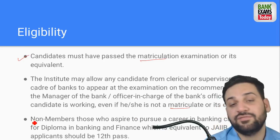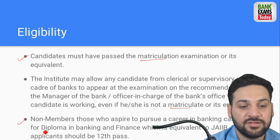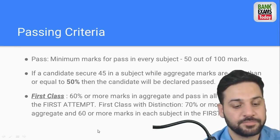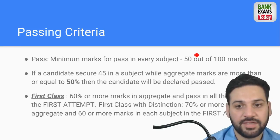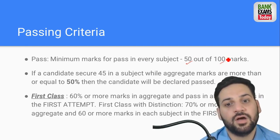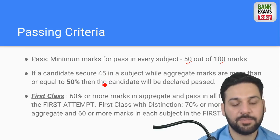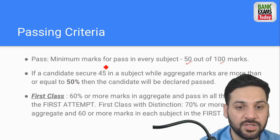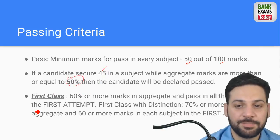For non-members, if they have done 12th, then they need a diploma in banking and finance. You need to get 50 marks out of 100. If you score 45 and the aggregate is 50, then you will be declared passed.